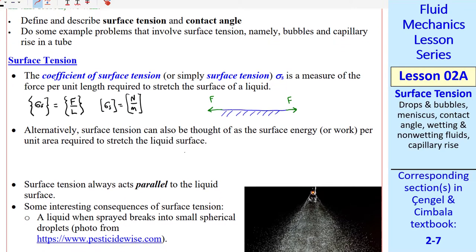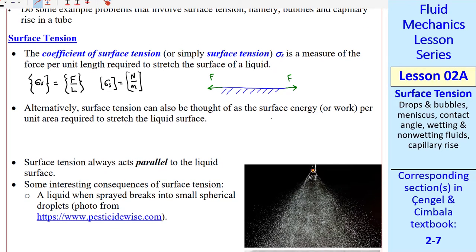An alternate explanation is that surface tension can be thought of as the surface energy, or work, per unit area required to stretch the liquid surface. In that case, the dimensions would be work, force times length, per unit area, L squared, which is the same as above, f over L. Of course, the units are also the same. In this case, the area would be the surface itself.